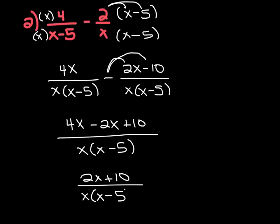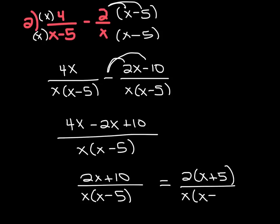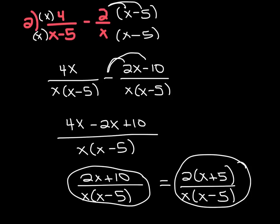Even if you try to factor the top — you can pull out a 2, leaving you with x plus 5 — nothing is going to cancel anyway, because x plus 5 doesn't cancel with x minus 5. So you can either leave your answer in factored form like this, or now that we know nothing cancels, you can distribute the x in to make the denominator say x squared minus 5x. That's okay too.